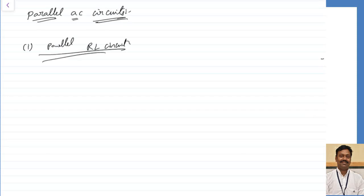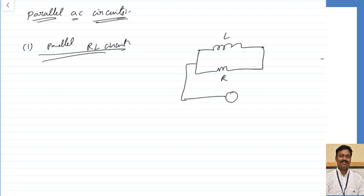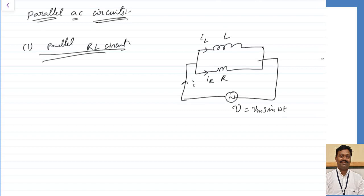The resistor is connected in parallel with an inductor. I am taking a resistor R, and let us assume inductor is L. This is connected to an AC supply. Let us assume the AC supply as a reference. So V maximum sin omega t, because of that the current I will pass, and this current will divide among the resistor IR as well as the current through the inductor.